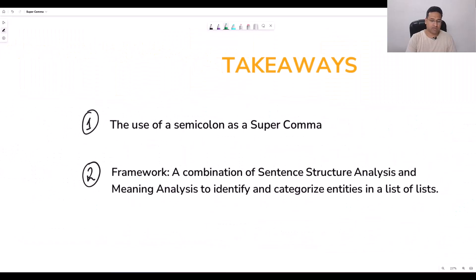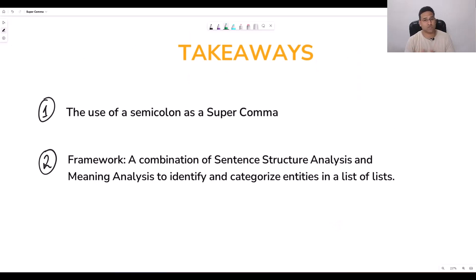Let's summarize what we have learned today. The takeaways from this particular session are number one, the use of a semicolon as a super comma. And more importantly, we looked at a framework. We used a tool to get ourselves out of that tight spot and that tool is the sentence structure analysis. You need to be able to apply this technique so that you can see list entities in a straight line. And then you need to perform meaning analysis to figure out whether you're dealing with super entities or sub entities of lists within lists.